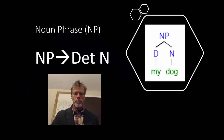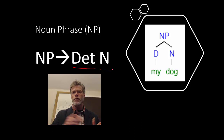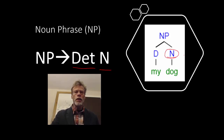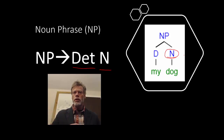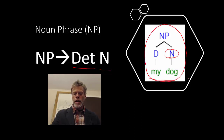A noun phrase consists of a determiner and a noun. All these noun phrases, verb phrases, and preposition phrases will always have a head. The head is whatever the phrase is named for, so the noun daughter of a noun phrase is the head of that noun phrase. As we saw earlier, nouns can combine with adjectives to form a noun, or nouns can combine with preposition phrases to form a noun, so we can get a lot more complexity. The phrase structure here is the simplest phrase structure for a noun phrase.